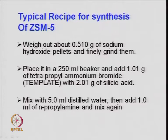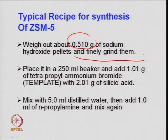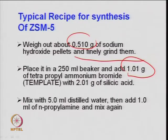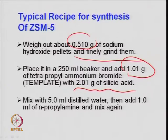The reagents required: a typical recipe for ZSM-5 preparation - just for 10 grams of the final solid material. You need 0.510 grams of sodium hydroxide pellets - ground them so the particles are in smaller form to dissolve properly. Place them in a 250 ml beaker and add 1.01 grams of tetrapropyl ammonium bromide, which is the templating agent. Then add 2.01 grams of silicic acid as the source of silica. Add 5 ml of distilled water - the quantity of water is very important.